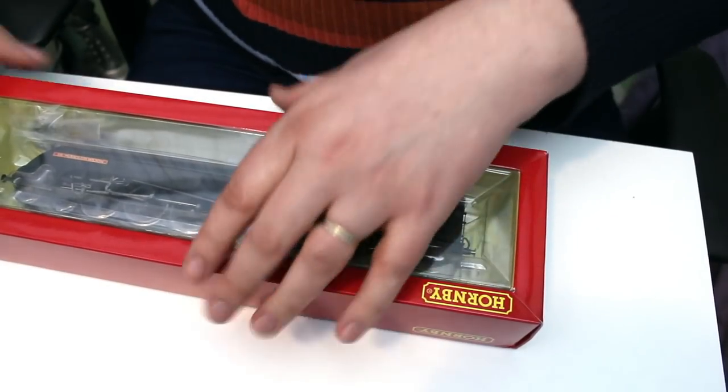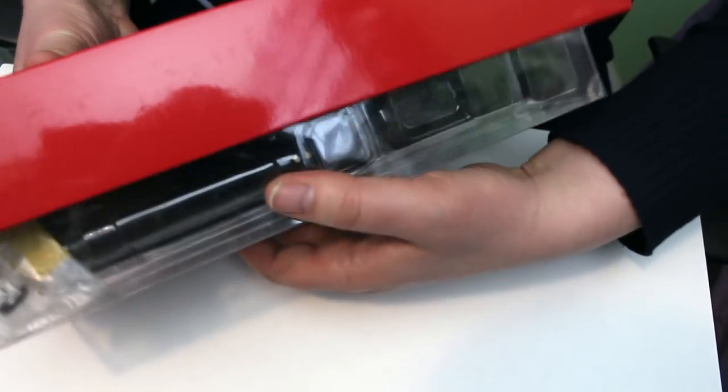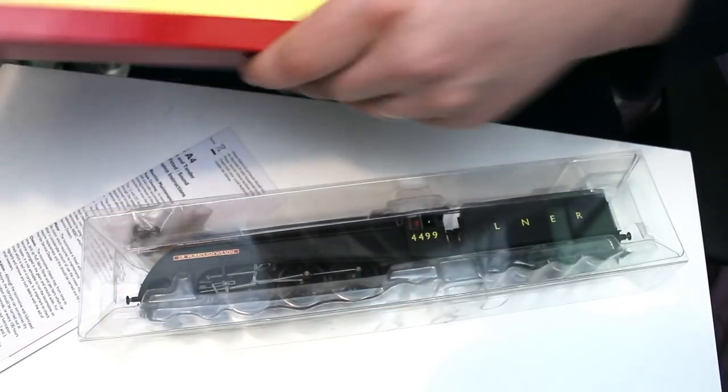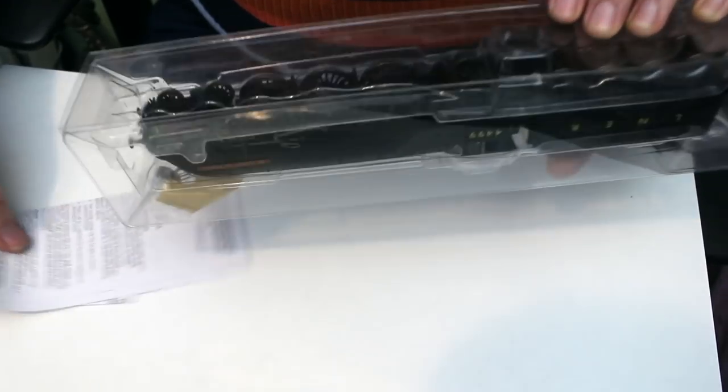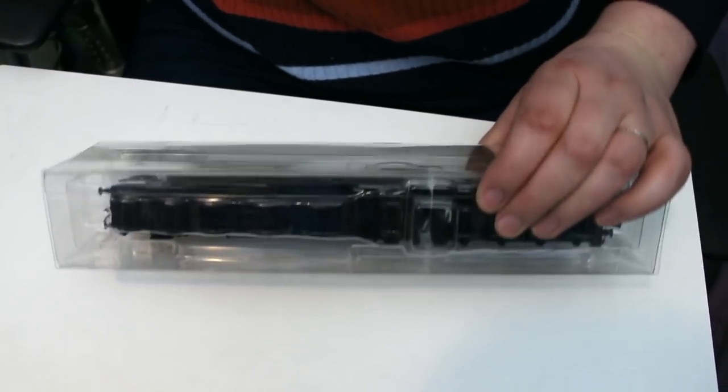So, pretty standard Hornby box and this is the much more up-to-date Super Detail A4 with the slightly more permanent connection between locomotive and tender.